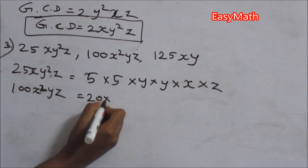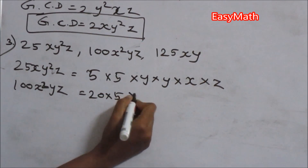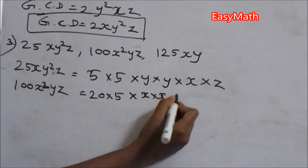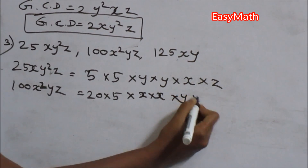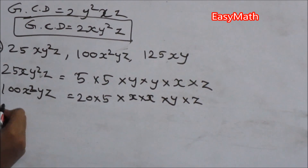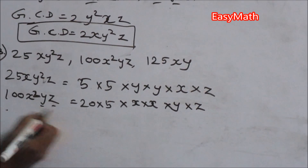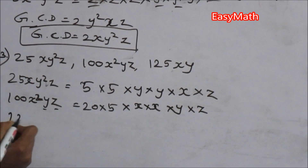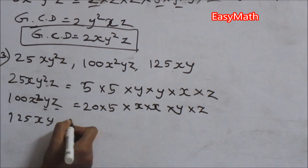100x²yz expands as 20 × 5, and x × x since the power of x is 2, then y and z since the power of y and z is 1 each.